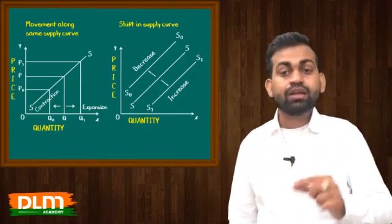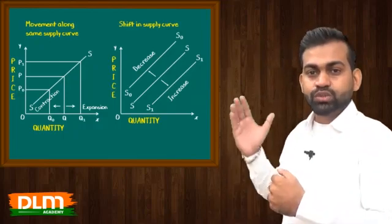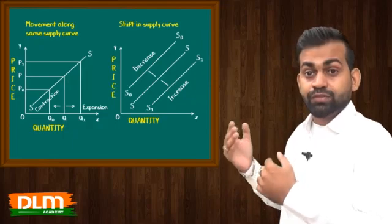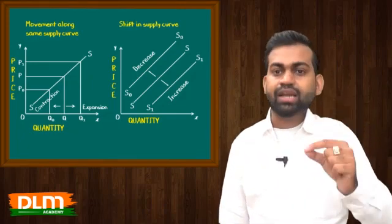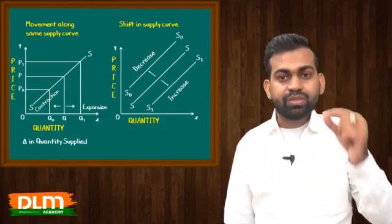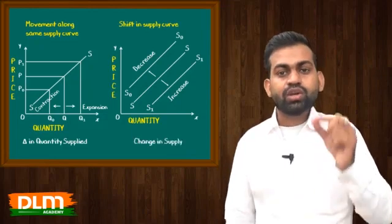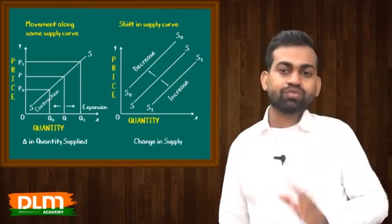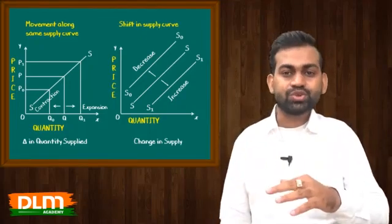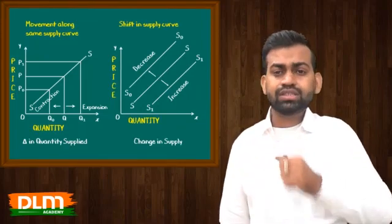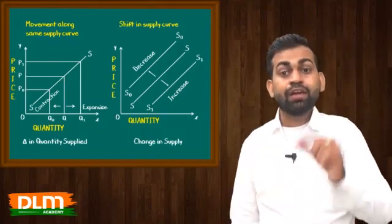Ab pehla wala concept kya hai — movement along same supply curve. Doosra wala concept kya hai — shift in supply curve. Diagram mein dekhen: pehle wale curve mein hum upar neeche usi curve pe move kar rahe hain, jabki doosre graph mein jo hamaara curve hai wo right aur left shift ho raha hai. Jo movement along same supply curve hai use other words mein change in quantity supplied kehte hain — quantity Q, Q1, Q0 change ho rahi hai. Jabki jo doosra concept hai, shift in supply curve, use hum kehte hain change in supply. Change in quantity supplied aur movement along same supply curve ka kaaran hota hai change in price. Jabki shift ka kaaran hota hai change in factors other than price — jaise cost change ho gayi ya government policy change ho gayi.